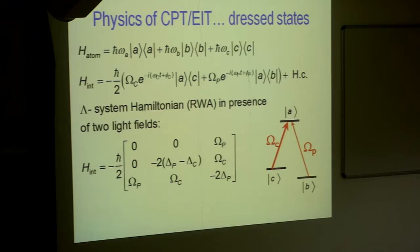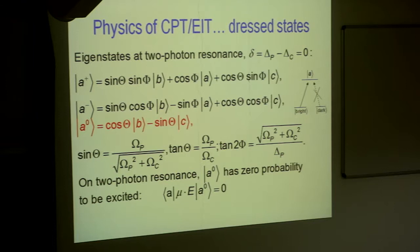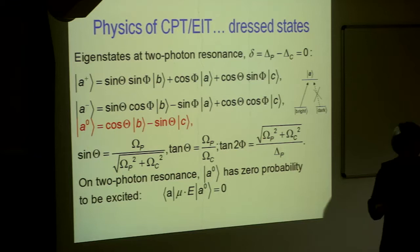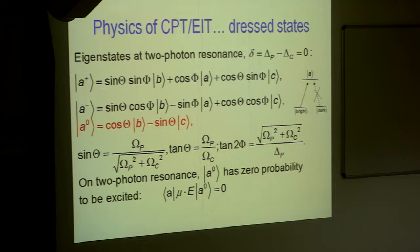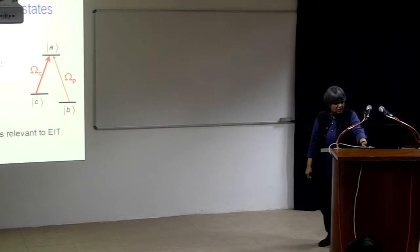Roughly that is the idea and we have actually done, you can solve this problem. The real issue is that if I solve the problem, what is interesting I want to point out is that when you solve that, you get an eigenstate which is called the dark state. On two photon resonance, this has a zero probability to be excited. So, even though it is on resonance, the system has a state that is always dark, it does not see light.